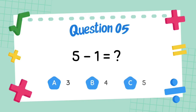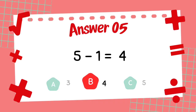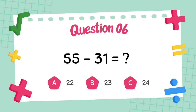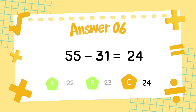What is 5 minus 1? The answer is 4. What is 55 minus 31? The answer is 24.